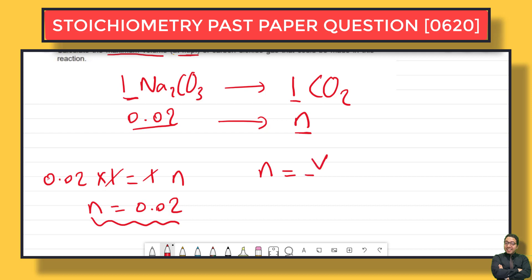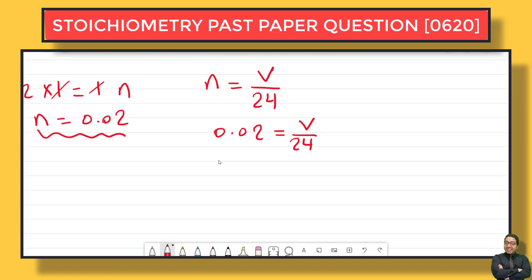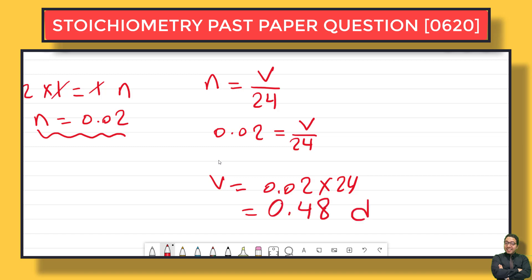Using the molar volume equation at RTP: n = V ÷ 24, so 0.02 = V ÷ 24. Therefore V = 0.02 × 24 = 0.48 dm³. The maximum volume of carbon dioxide produced is 0.48 dm³.